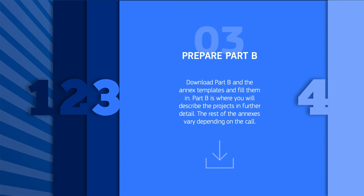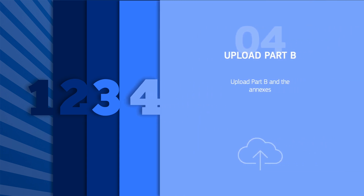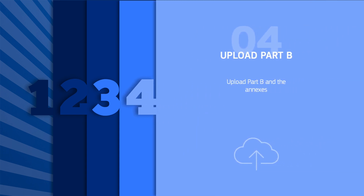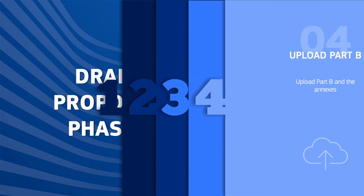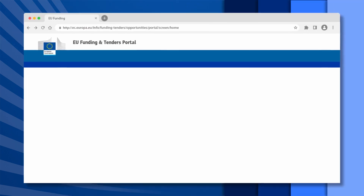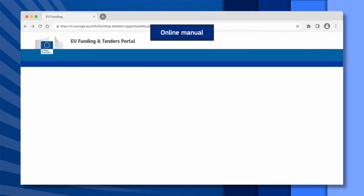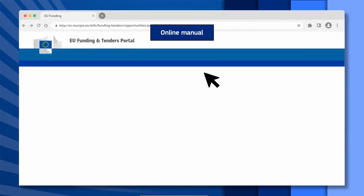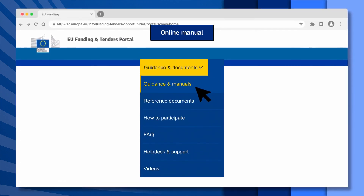Fill in the templates. Part B is where you will describe the project in further detail. The rest of the annexes vary depending on the call. For phase four, upload Part B and the annexes. You can find more information in the online manual, which is available in the support section of the portal.